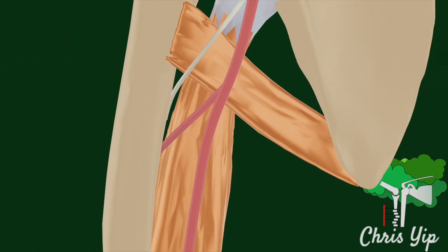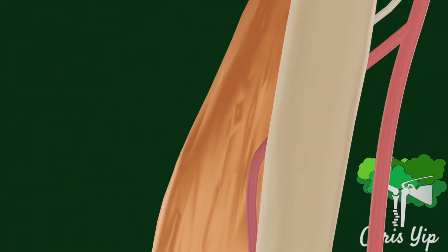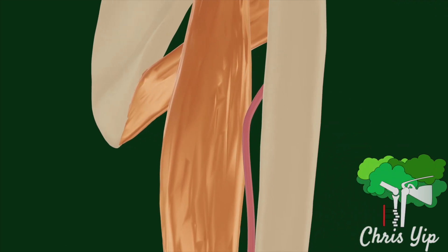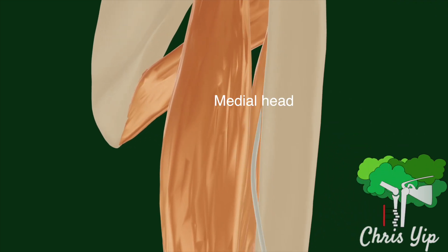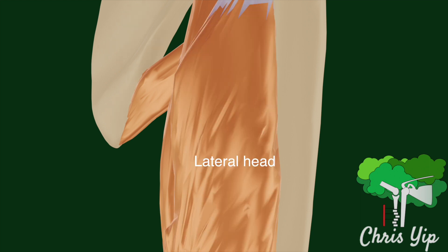Behind the humerus, the nerve spirals obliquely downwards. The branches supplying the three heads of the triceps are given off near the radial nerve's origin in the axilla, and travel along with the main nerve to this region to innervate the tricep muscles.